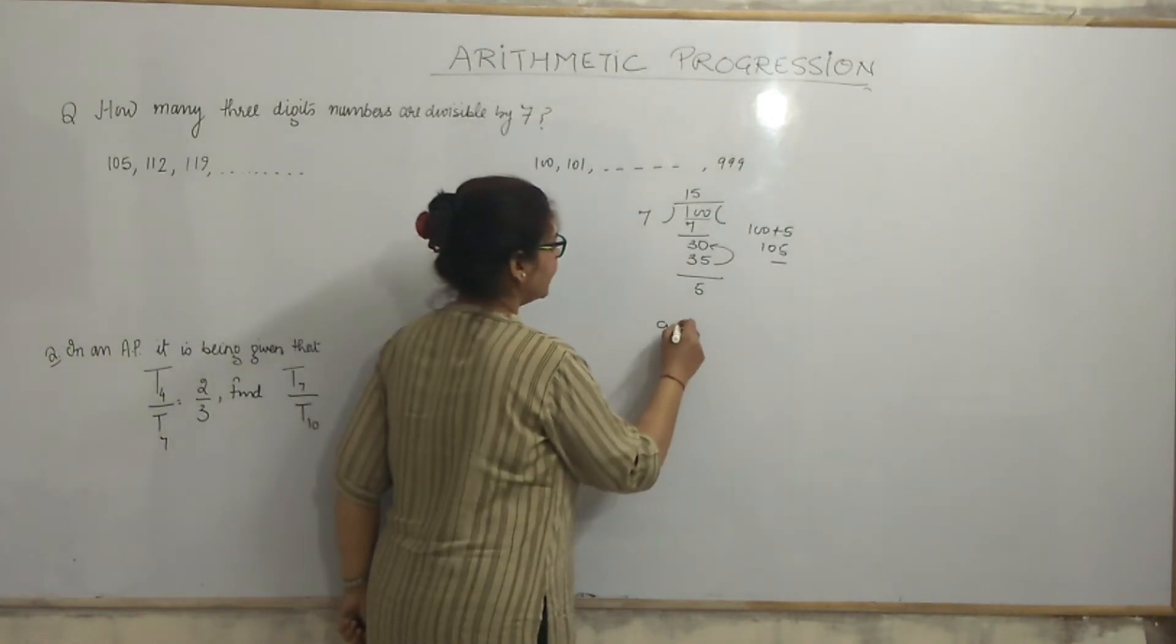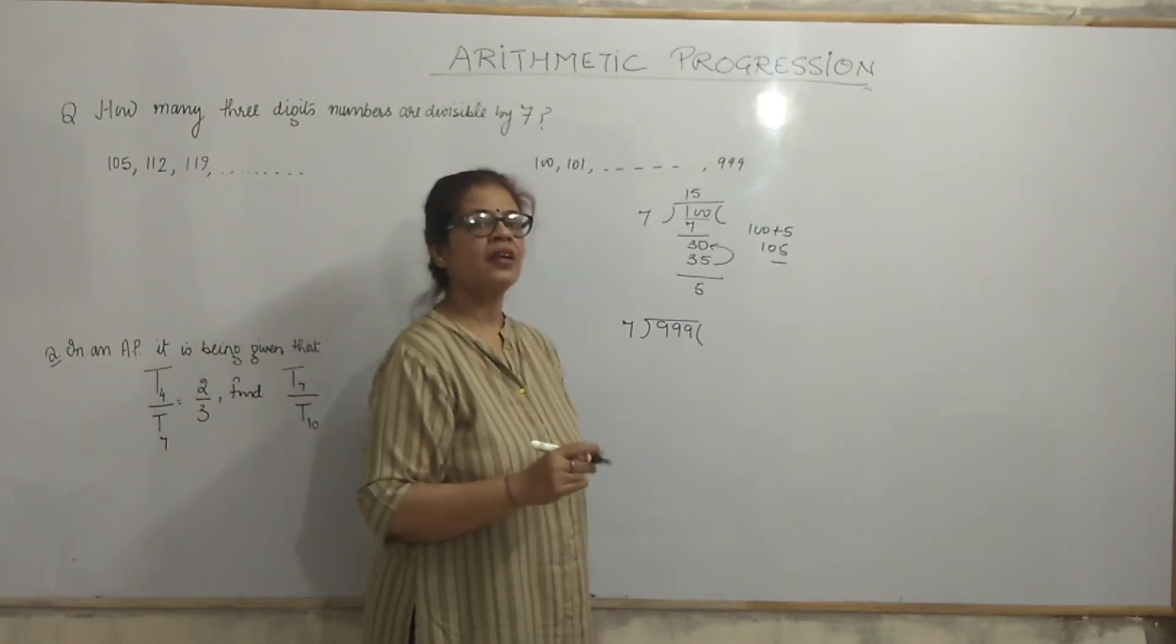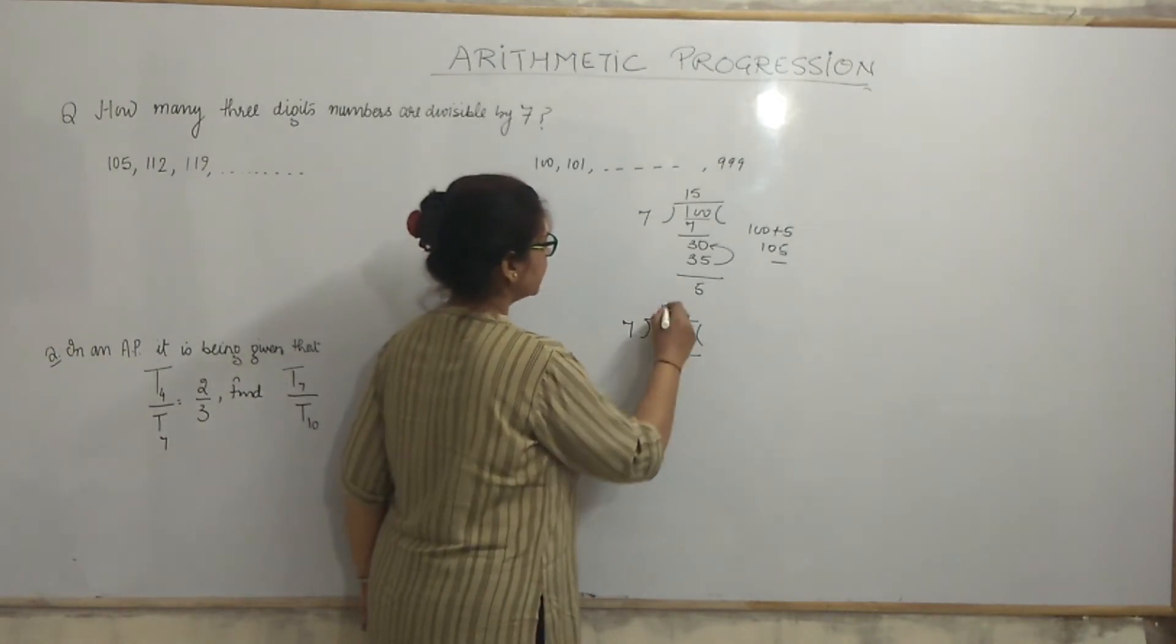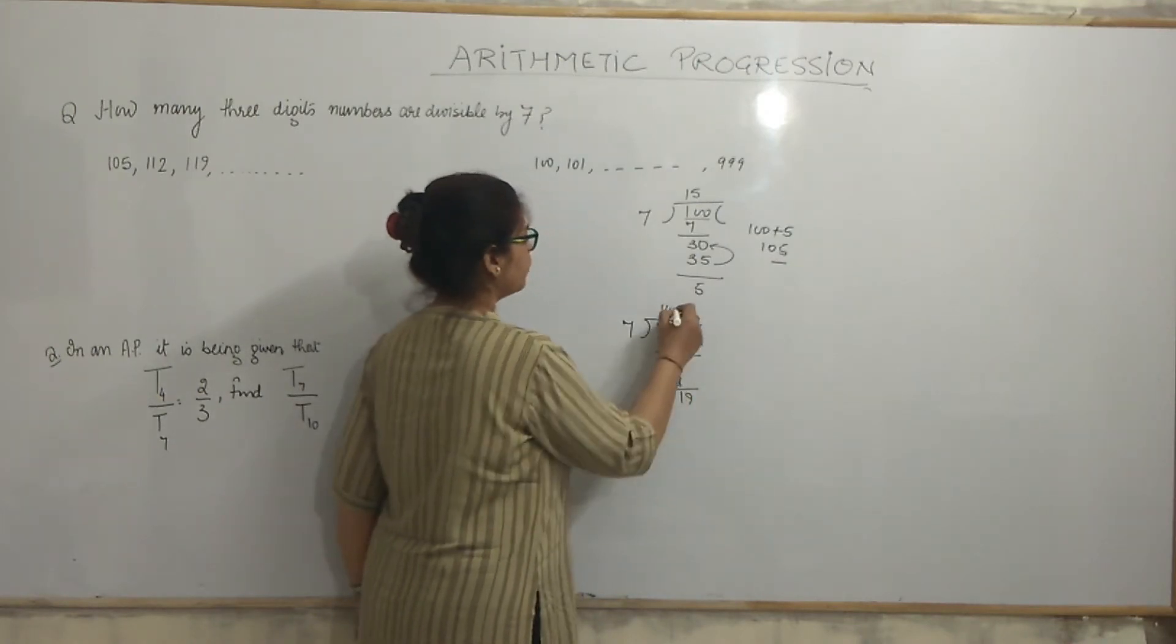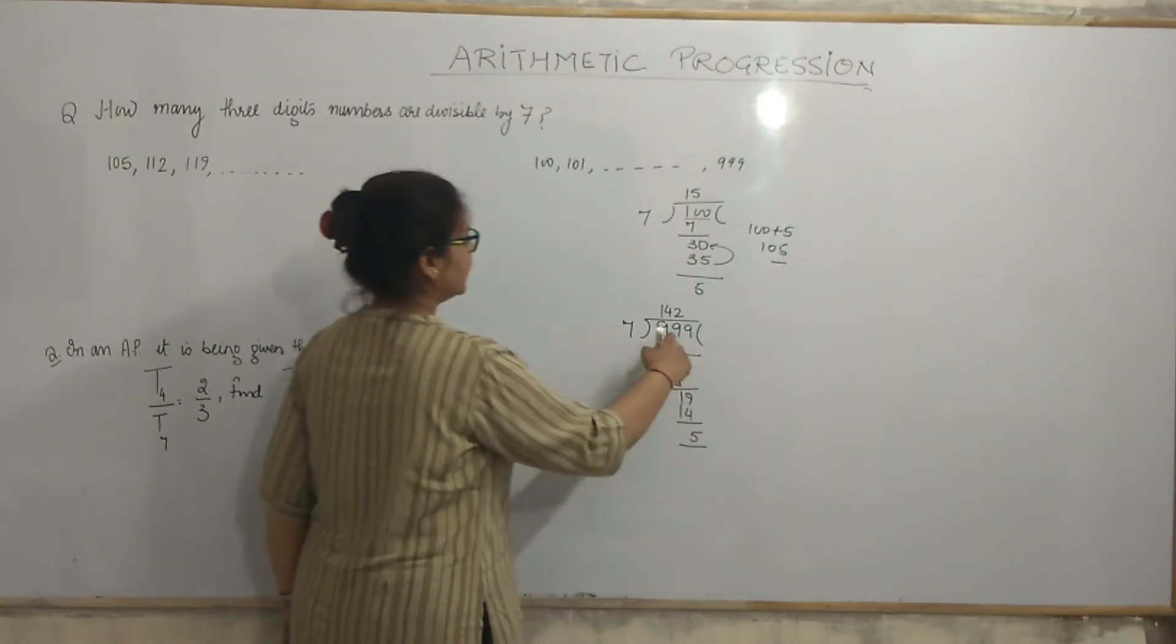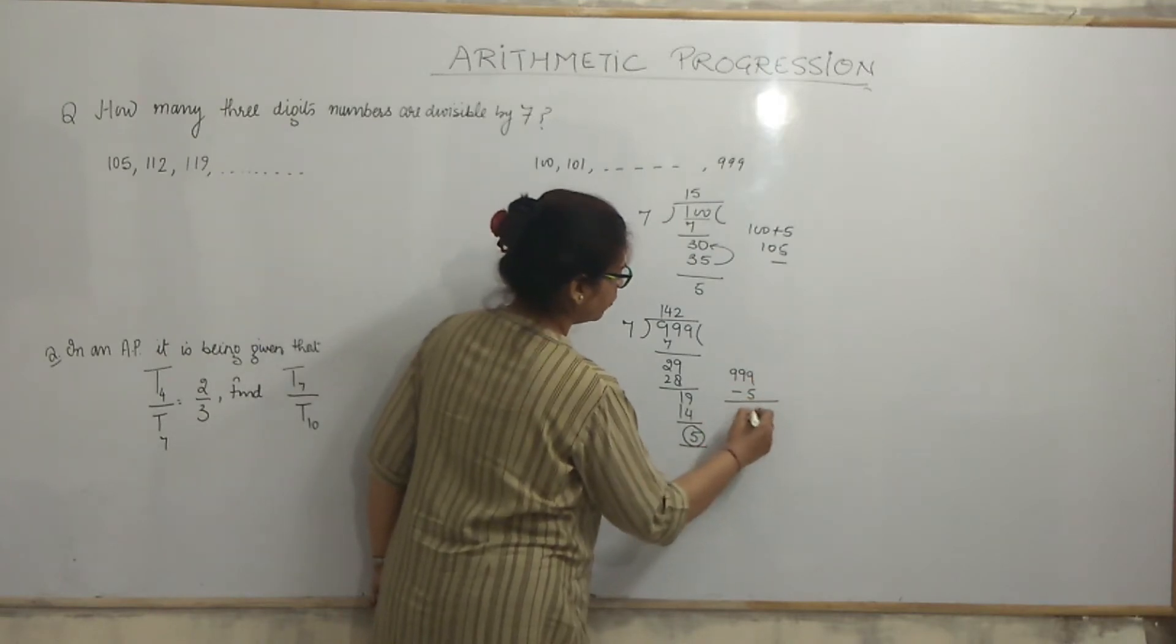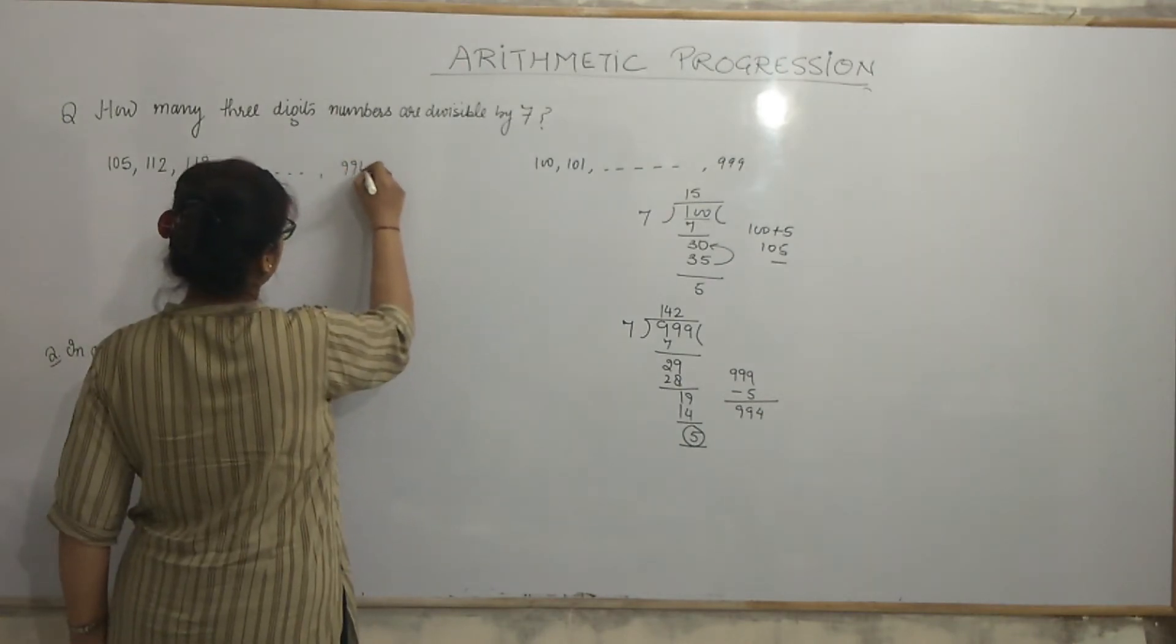Now, where this series ends. So, let us take 999, divide it by 7. I am searching the number, very last 3-digit number which is divisible by 7. 7 ones are 7, 29, 7 fours are 28, 19, again 7 twos are 14, 5 remainder. So, 999, it gives me 5 remainder. 999 minus 5. 9 minus 5, 4, 9 and 9. So, this series ends here, 994.